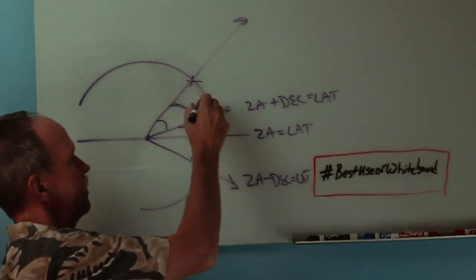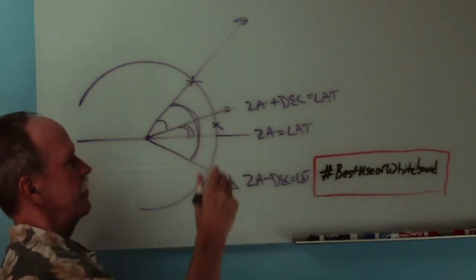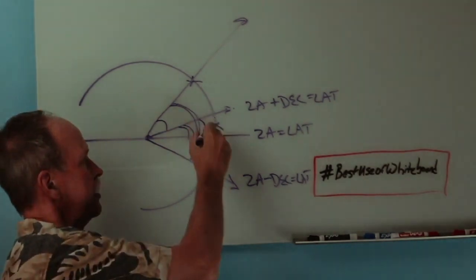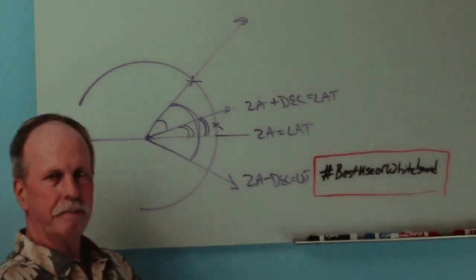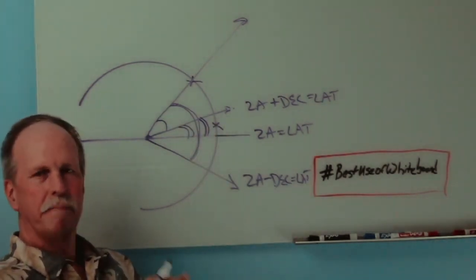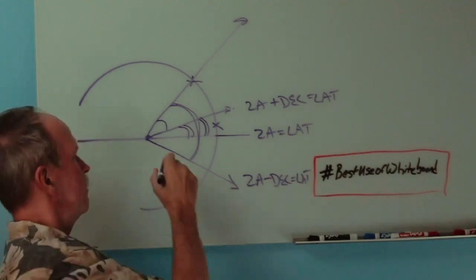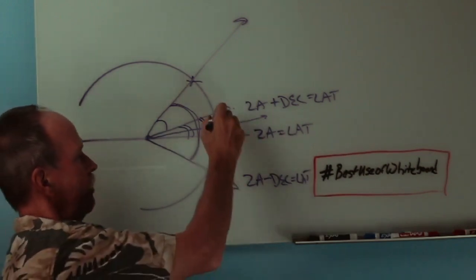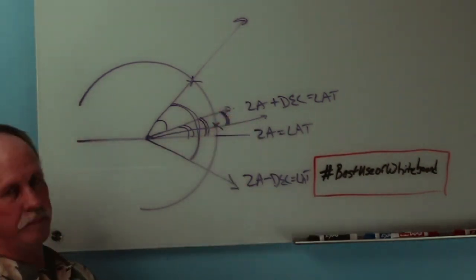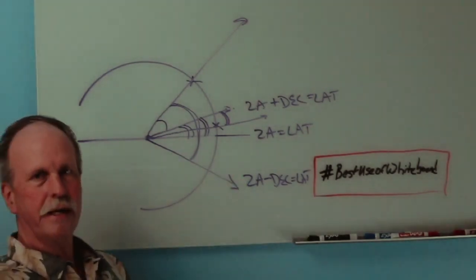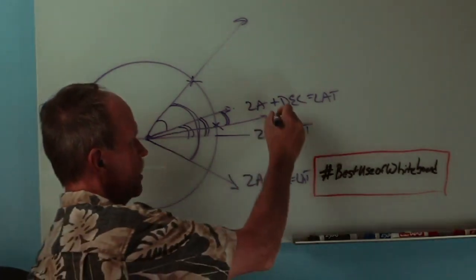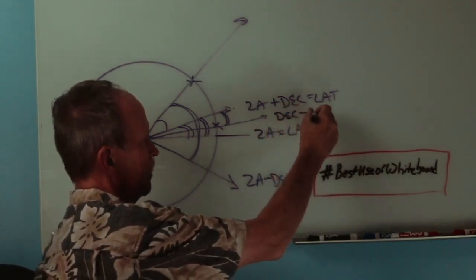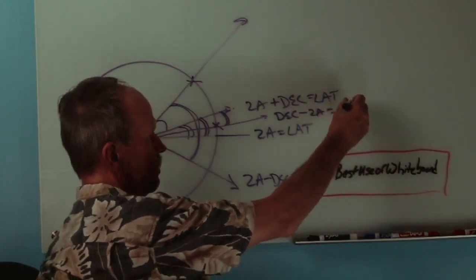What if instead of being up here, we're down here and the Sun is further away from us than the equator? We'll know this declination right here from the Naval Almanac. What are we going to measure when we get out our sextant? Well, first of all, that will be our new zenith and we will measure that angle right there. So what is our true latitude? Well, in that case, it's declination minus our zenith angle equals our latitude.